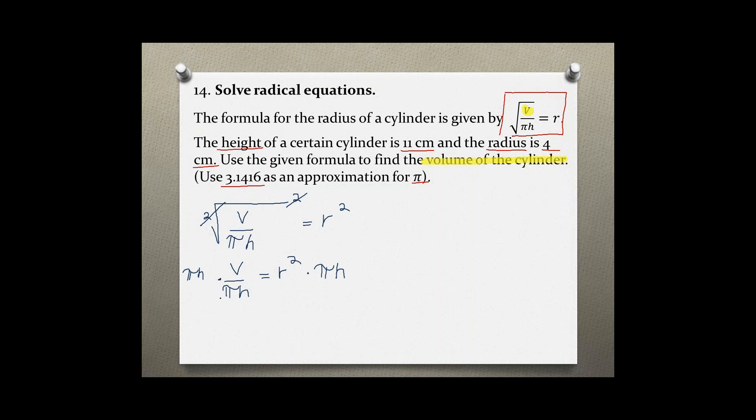On the left side the pi and h in the denominator cancel out with the pi and h in the numerator and v is by itself, my volume. On the right side I just have r squared pi h.